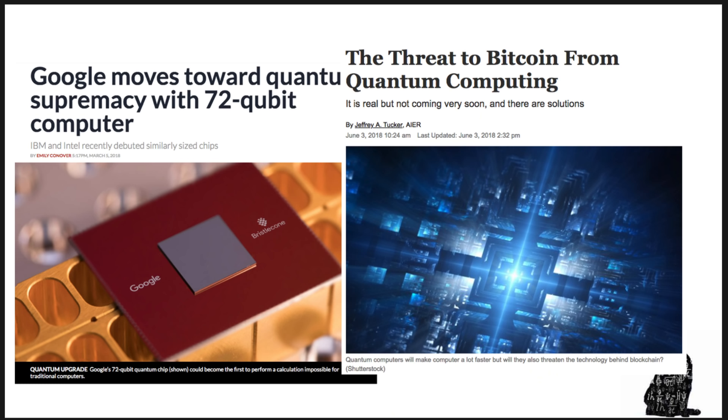Google moves towards quantum supremacy with a 72-qubit computer. Well, that sounds like we're really making progress, really quickly. I mean, quantum supremacy sounds pretty cool. Again, we can ask the important questions in life, what happens to my bitcoins when a quantum computer comes around the block?